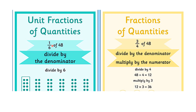Unit fraction means the numerator is one, for example one over six multiplied by forty-eight. Now for fraction of quantities, here you can see three over four of forty-eight. You divide by the denominator, then multiply by the numerator. Forty-eight divided by four is equal to twelve, and twelve multiplied by three is equal to thirty-six.